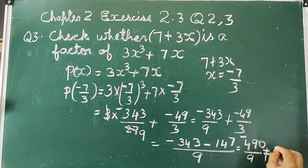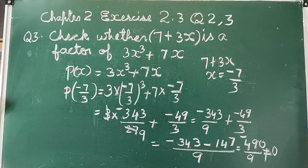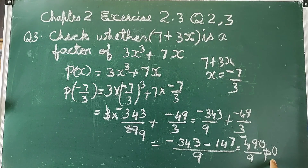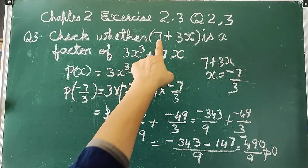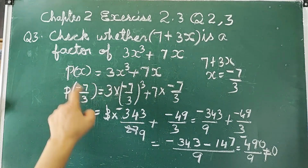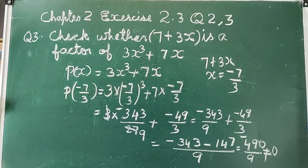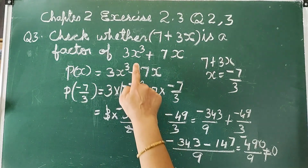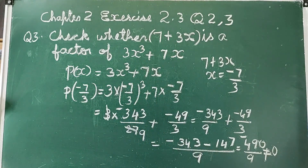That is not equal to 0. Since the remainder is not equal to 0, therefore 7 plus 3x is not a factor of 3x cubed plus 7x.